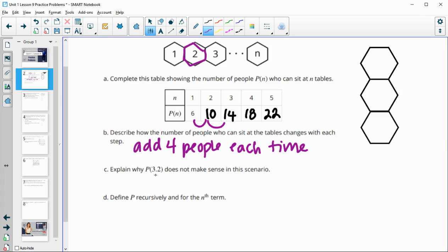And then explain why P of 3.2 doesn't make sense in this situation. So remember that this is the number of tables. So then 3.2 would be a number of tables, so you can't have decimal tables.